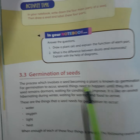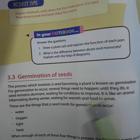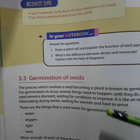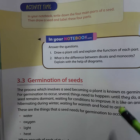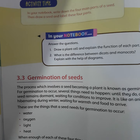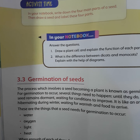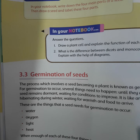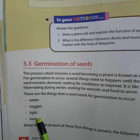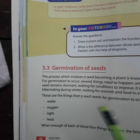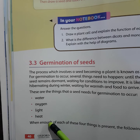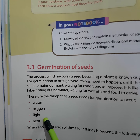Seed को कुछ conditions की ज़रूरत होती है। जब यह proper amount में मिलती हैं, तो germination start होता है। तक़रीबन four essential things होती हैं जिनकी seed को proper amount में need होती है germinate करने के लिए। इन four essential things में water, oxygen, light, और heat शामिल हैं। जब seed यह four elements receive करता है तो germination start करता है।